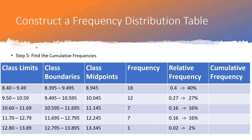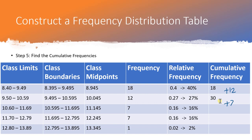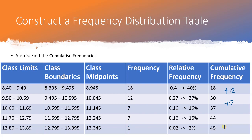Finally, we calculate cumulative frequencies. We start at the first class and accumulate as we go down. Start with 18, then add the next frequency: 18 + 12 = 30. Add the next: 30 + 7 = 37. Add the next 7: 37 + 7 = 44. Add the last 1: 44 + 1 = 45. Your final cumulative frequency should always equal n, your sample size. If it doesn't, you've made an addition mistake.